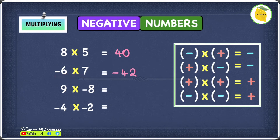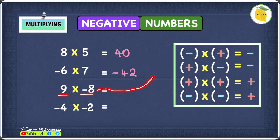What about 9 times minus 8? For 9 times minus 8, we have a positive number and a negative number. When you have two different signs, your answer will be negative. So 9 times minus 8 gives us an answer of negative 72.